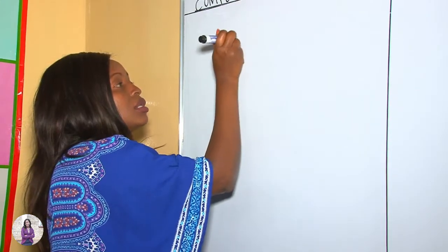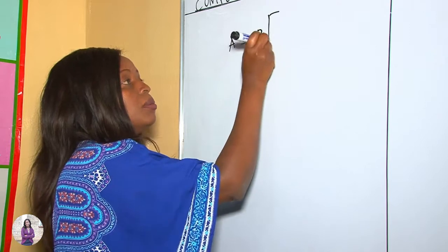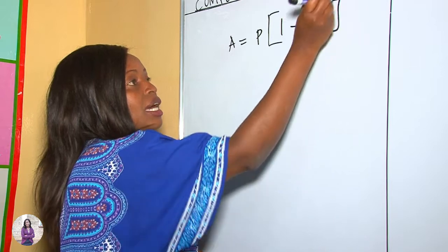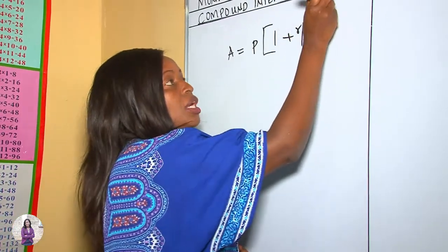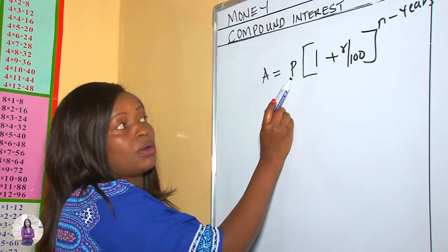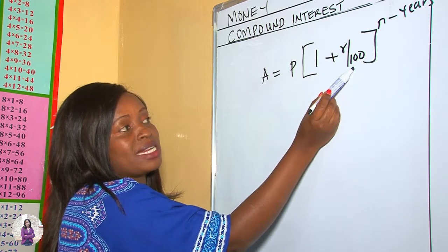That is the amount in the bank if you save money at the end of a given time, or the amount to be returned after a certain period if you had borrowed money from a financial institution. The formula states: Amount = Principal × (1 + Rate/100)^n, where n stands for years, r is the rate, and P is the principal. Remember, rate is always given as a percentage.